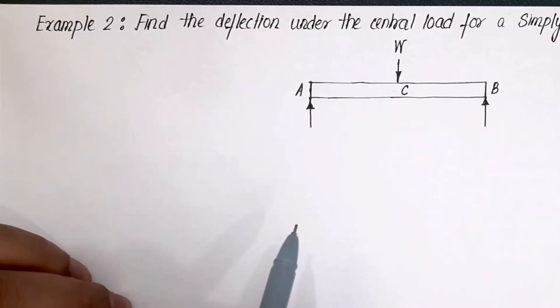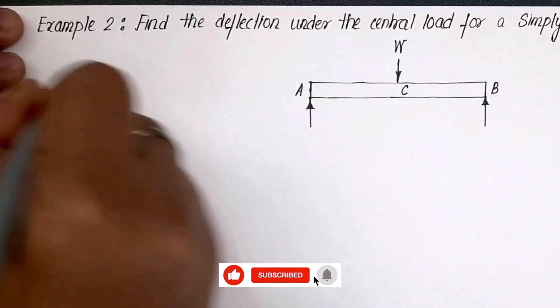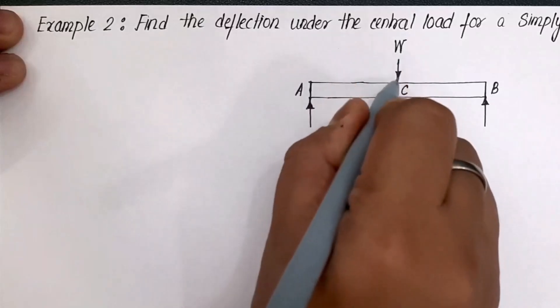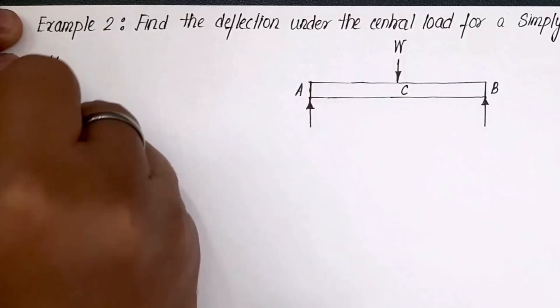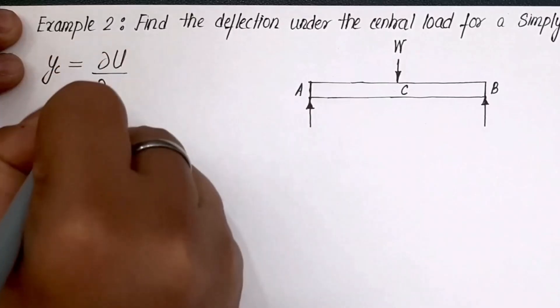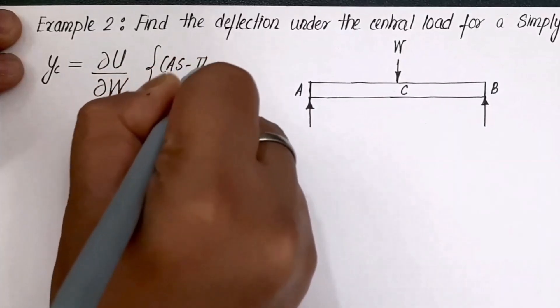Let's see, you want a deflection at C, then there must be a point load acting at C. Y_C, according to Castigliano's theorem, is equal to del U over del W. This is Castigliano's theorem.